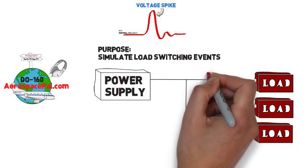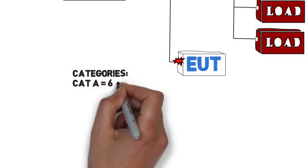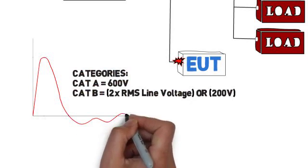There are two categories for this section: CAT A and CAT B. CAT A is tested to 600V, while CAT B is two times the line voltage RMS or 200V, whichever is the lesser of the two.